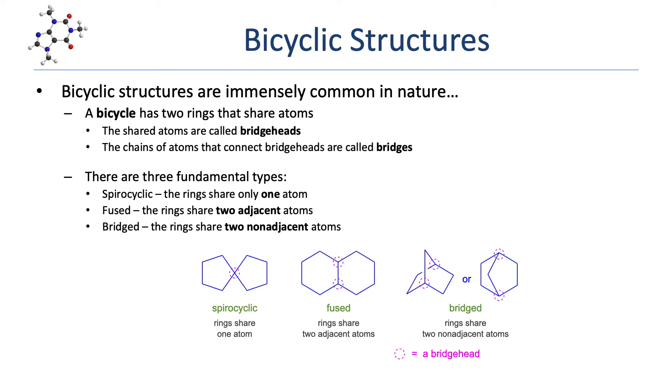There are three fundamental types of bicycles: spirocycles, fused bicycles, and bridged bicycles.